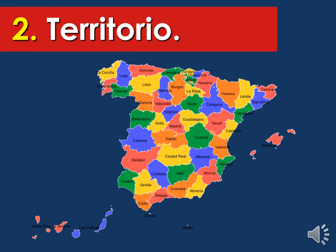These are the cities divided across all those autonomous communities — this is what it looks like with each city. As you can notice, Spain is not that big of a country; it's actually pretty small. The main capital is here — Madrid. One of the most important cities near the coast is Barcelona, then Cádiz, Valencia, and Sevilla.